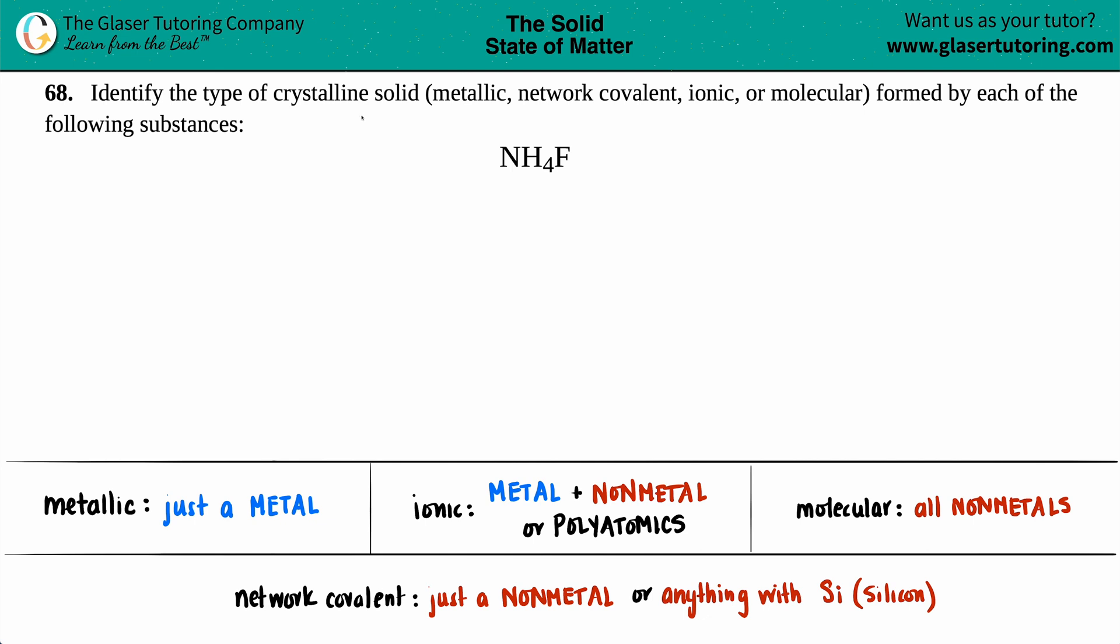Number 68: Identify the type of crystalline solid - whether it's metallic, network covalent, ionic, or molecular - formed by each of the following substances. In this case, we have NH4F, which is ammonium fluoride. I wrote a little cheat sheet down here for you guys to memorize for your next test or quiz.